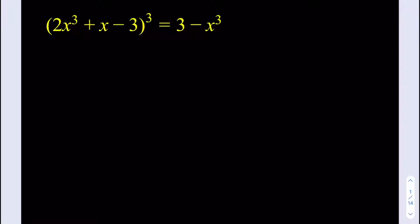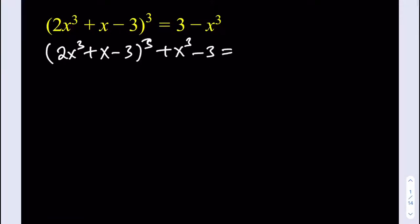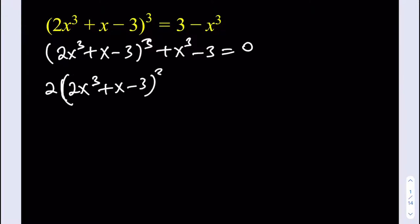So I'll be getting (2x³ + x - 3)³ + (x - 3)³ is equal to 0. What I'm going to do next — this might be a little surprising — I'm going to multiply both sides by 2, and you're going to know in a little bit why I'm doing that.